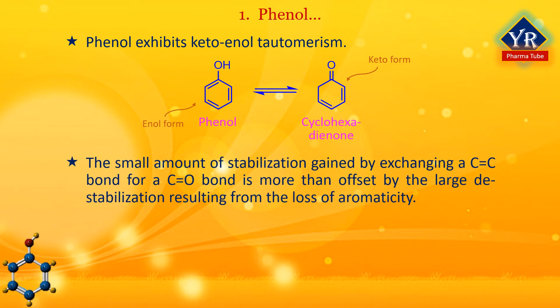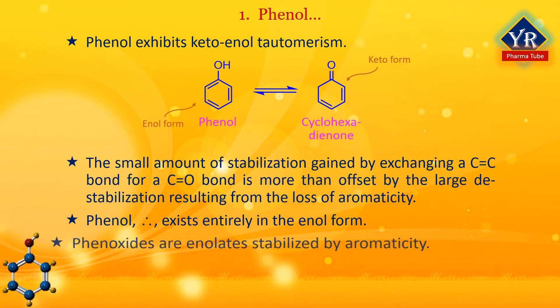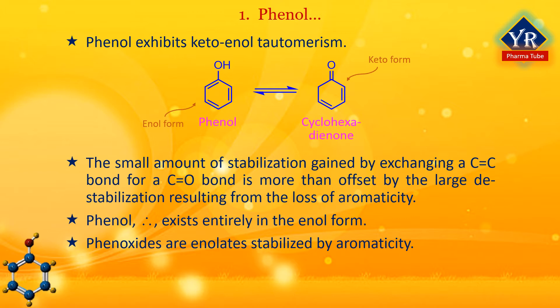The small amount of stabilization gained by exchanging a carbon-carbon double bond for a carbon-oxygen bond is more than offset by the large destabilization resulting from the loss of aromaticity. Phenol therefore exists essentially entirely in the enol form. Phenoxides are enolates stabilized by aromaticity. Under normal circumstances, phenoxide is more reactive at the oxygen position, but the oxygen position is a hard nucleophile whereas the alpha-carbon positions tend to be soft.